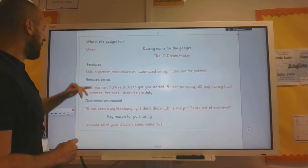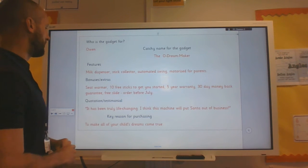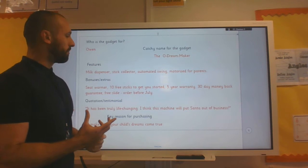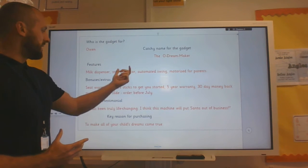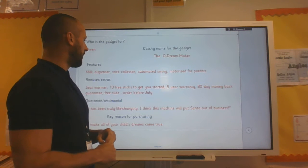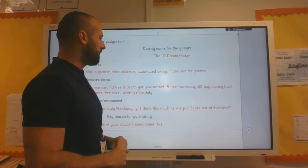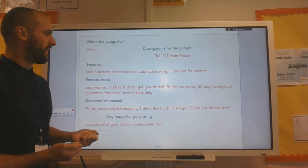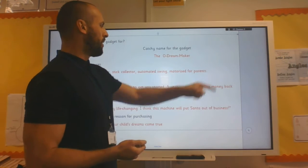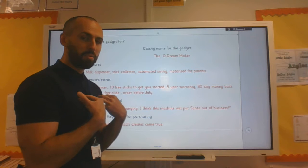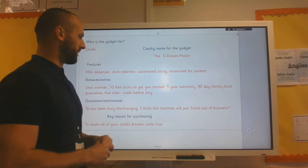Its features: it's got a milk dispenser because if he could he'd sit there drinking milk all day, a stick collector because he often likes to collect a stick when we're out walking and try and hit me with it, an automated swing because he'd sit in the swing for hours, and it's motorized for parents because obviously I'd be the one buying it so there needs to be something there for me.